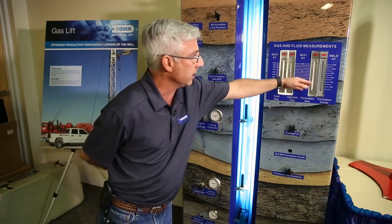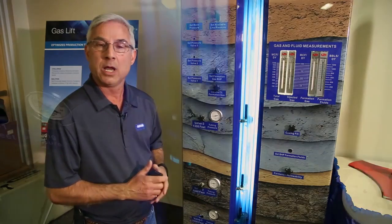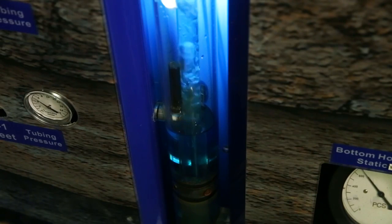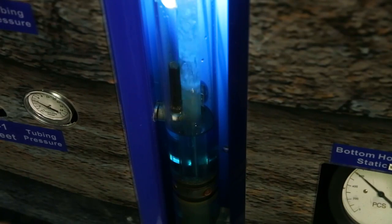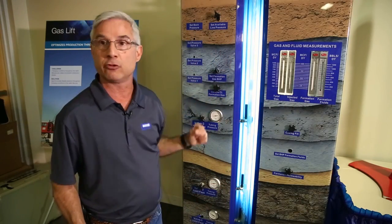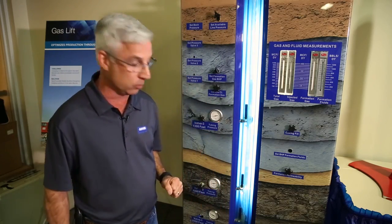Even though this well is making 600–700 barrels a day, we are continuing to unload the fluid in the casing and tubing. When we reach the bottom valve, we'll have our maximum drawdown on the well. We are now uncovering the bottom valve. Because of our gas lift design, we have designed the upper valves to shut at a certain casing pressure and they will not reopen — we want to get gas in as deep as possible.